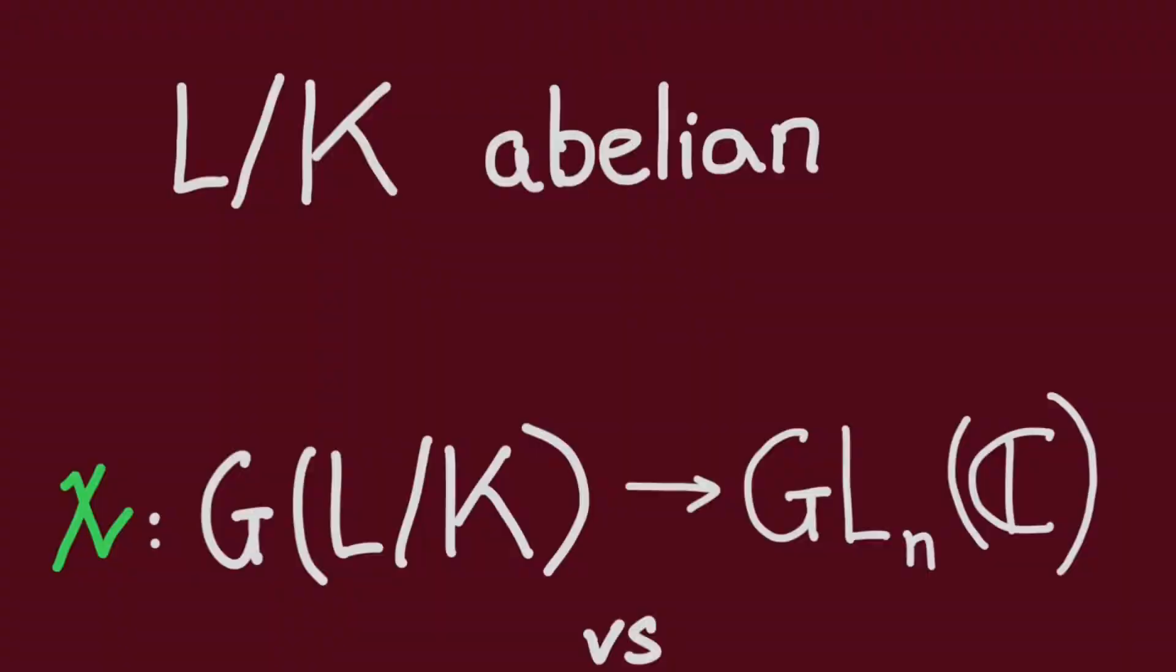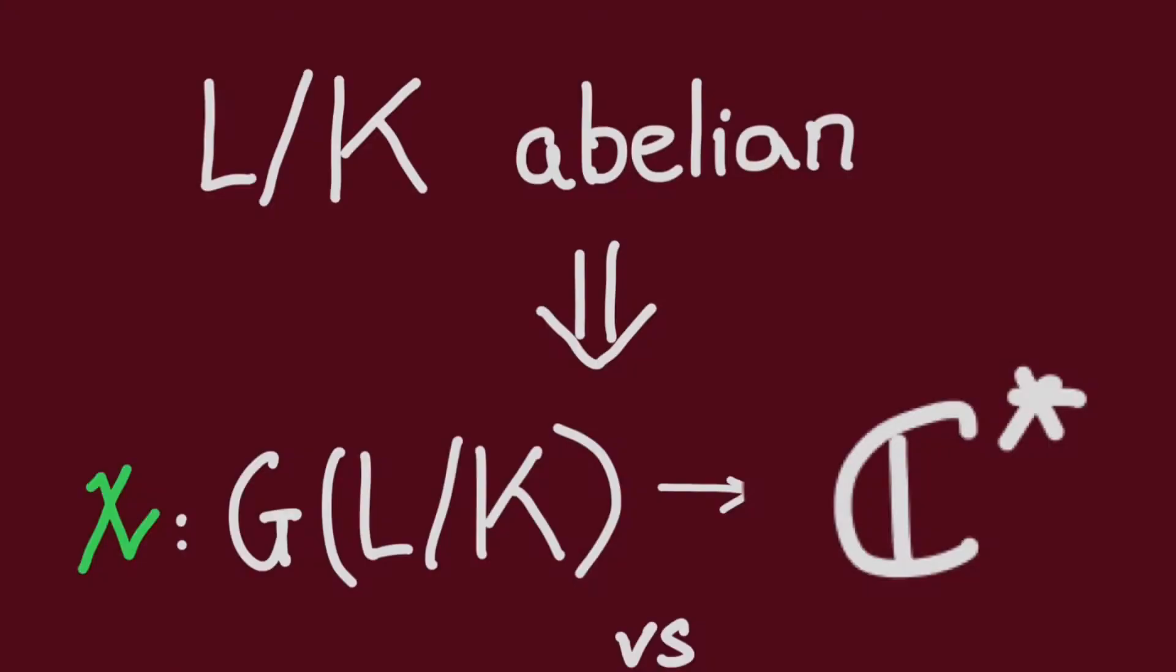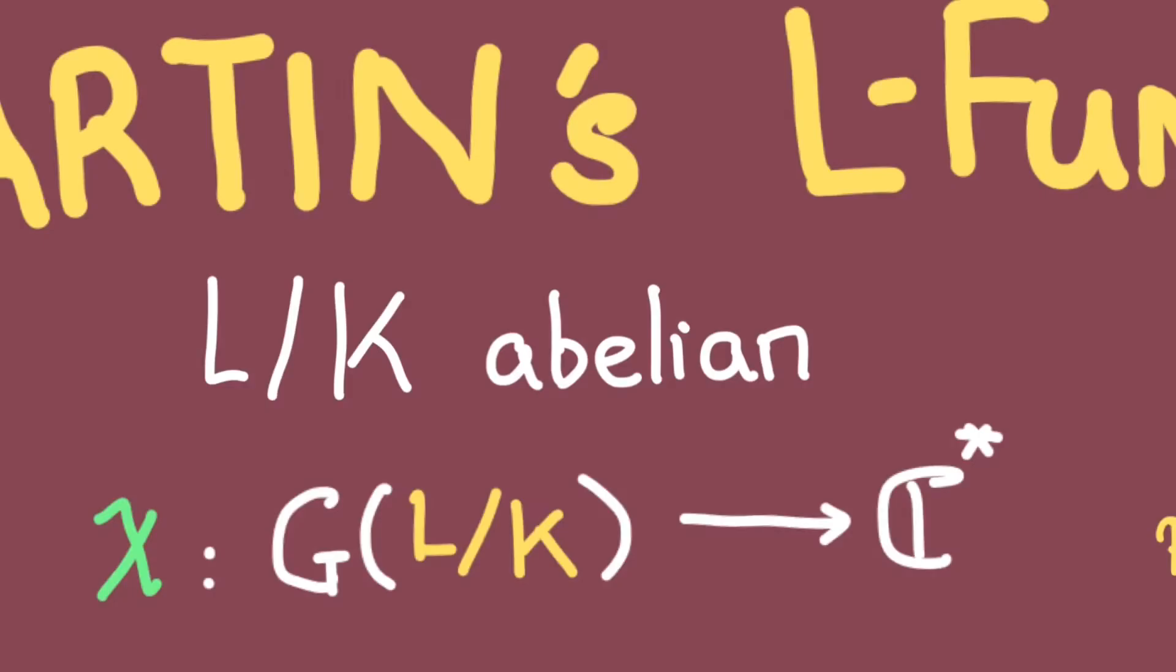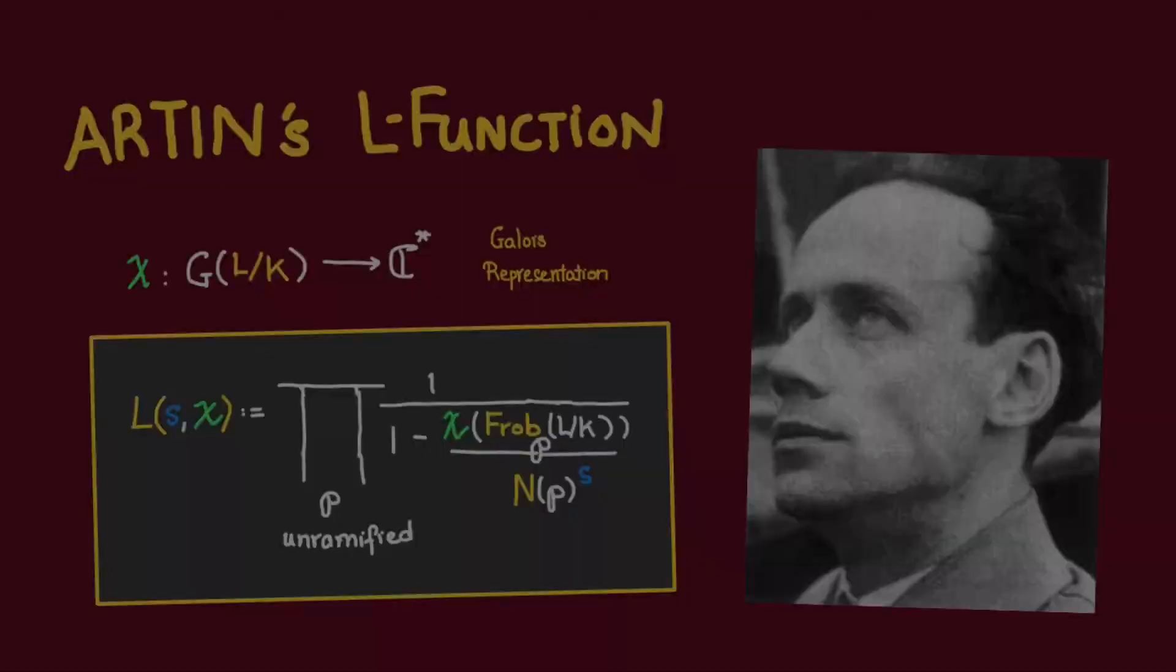Note that if L over K is abelian, then every such representation must have target being C star because no other general linear group is abelian. Thus, Galois representations of an abelian extension just corresponds to characters on the Galois group. And in that case, the definition of the Artin L function becomes the following.